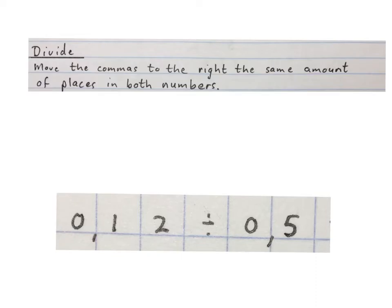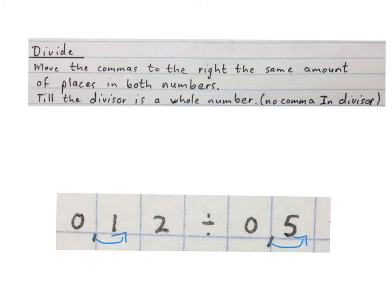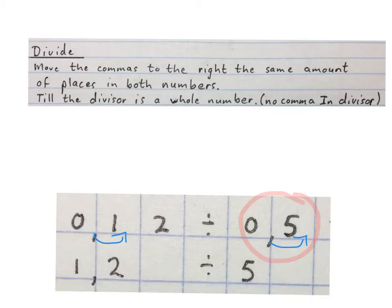A few rules you must remember when we divide: you move the commas to the right the same amount of places in both numbers until the divisor is a whole number — in other words, there is no comma in the divisor. The divisor is the number you're going to divide by. In this case we will move the comma one place to the right so as to get a divisor that has no comma in it anymore.